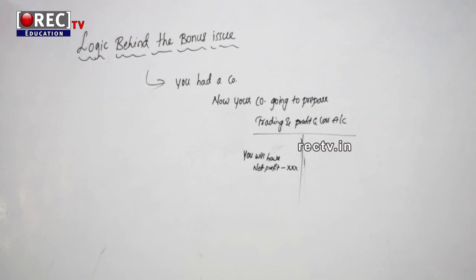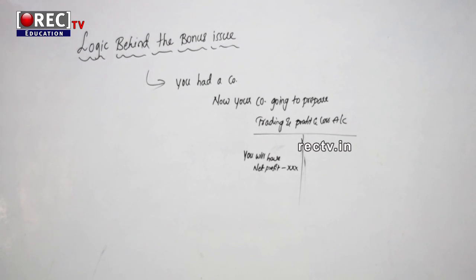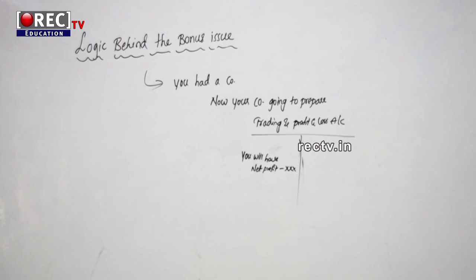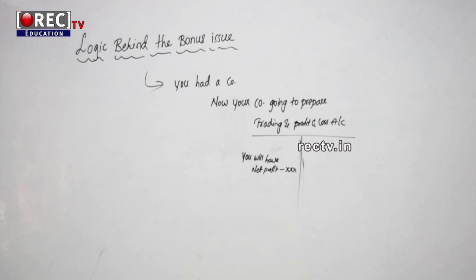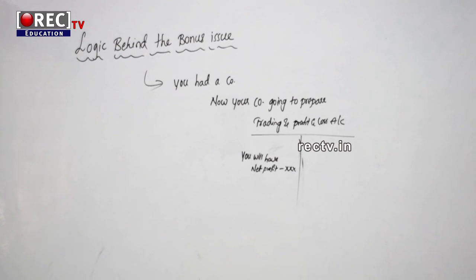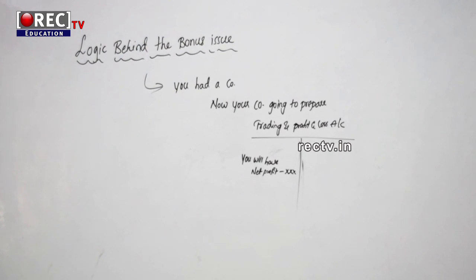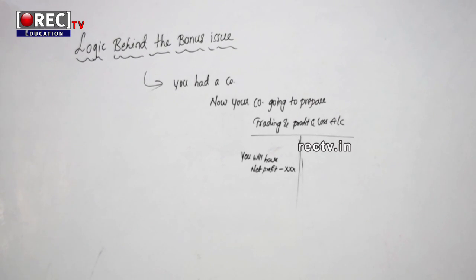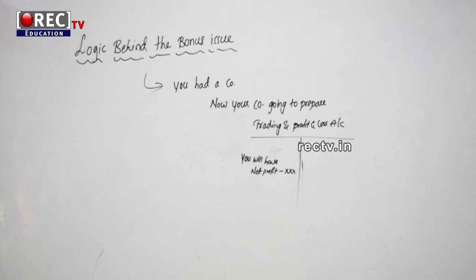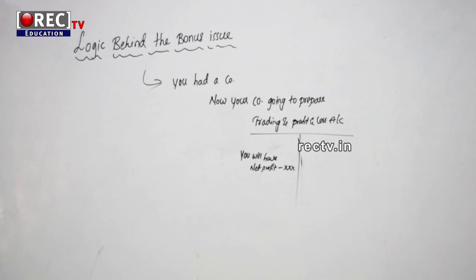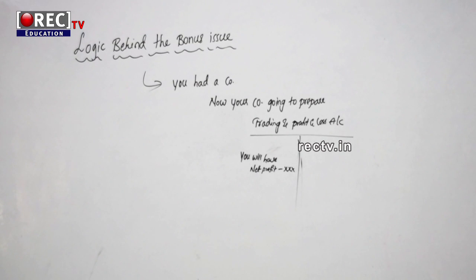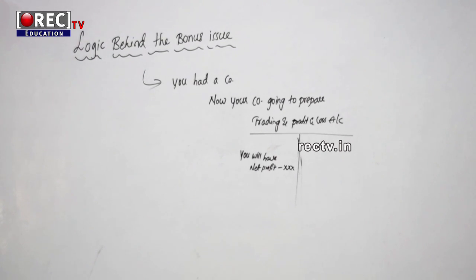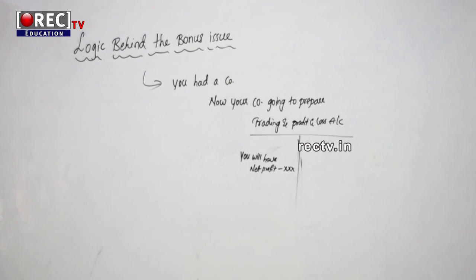For this reason, to avoid that cost and the dividend distribution tax, the company issues bonus shares instead. From the sources of bonus issue we discussed, the amount is transferred to equity share capital. So your number of shares increases along with capital. On the liability side, reserves will decrease and share capital will increase, so there is no net change in the balance sheet.